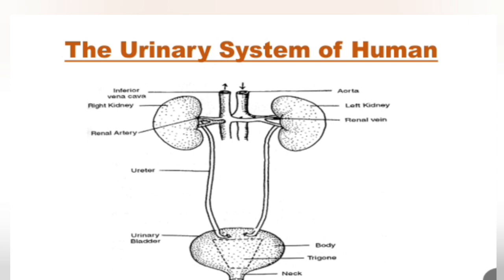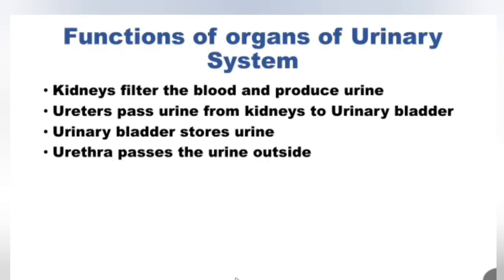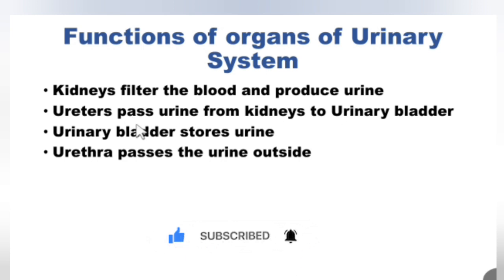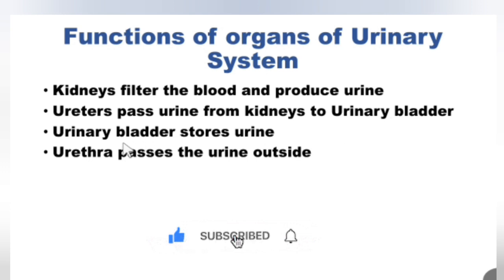Now let's revise the functions of the organs of the urinary system. The kidneys filter the blood and produce urine with the help of nephrons. The ureters pass urine from the kidneys to the urinary bladder, acting as a passage. The urinary bladder stores urine, and the urethra passes urine outside of the body.